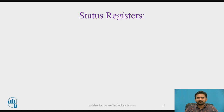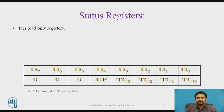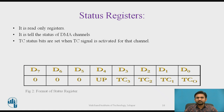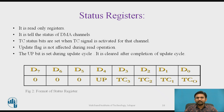About the status register: it is a read-only register where you can see 5 bits — D4, D3, D2, D1, D0. It tells the status of DMA channels. The TC status bits are set when the TC signal is activated for that channel. The update flag is not affected during a read operation. The UP bit is set during an update cycle and is cleared after completion of the update cycle.